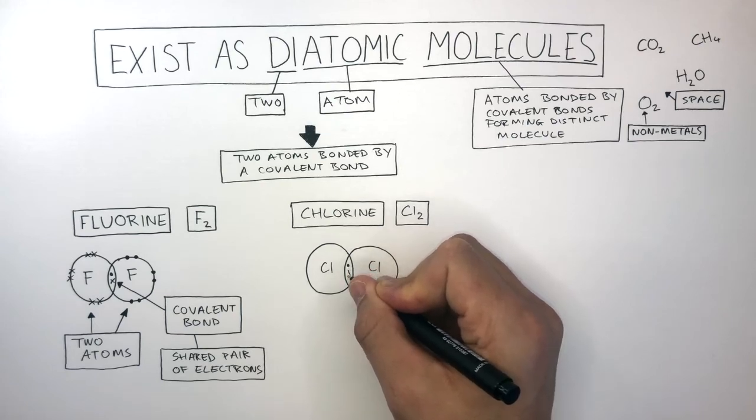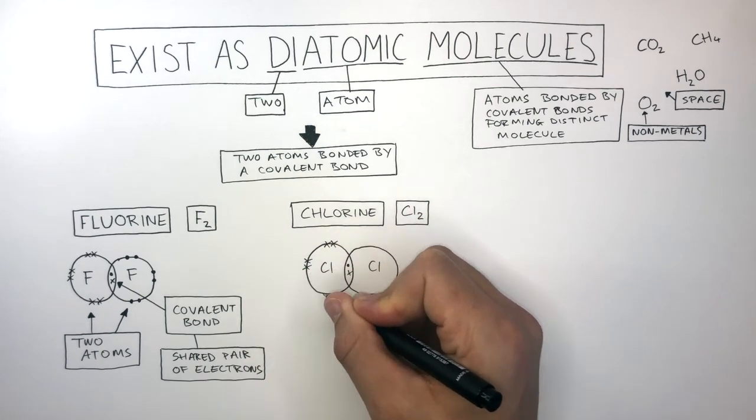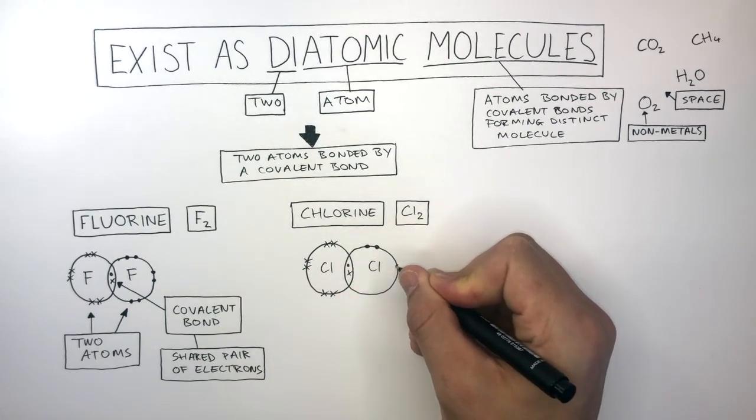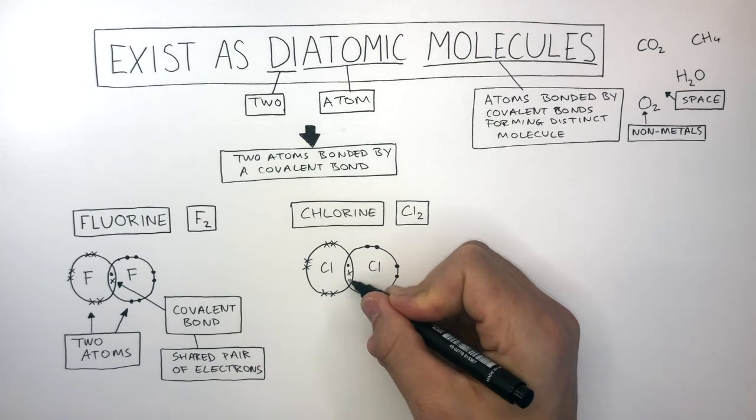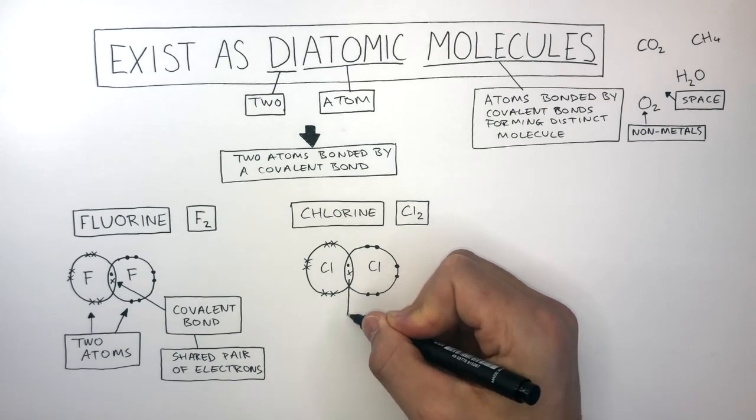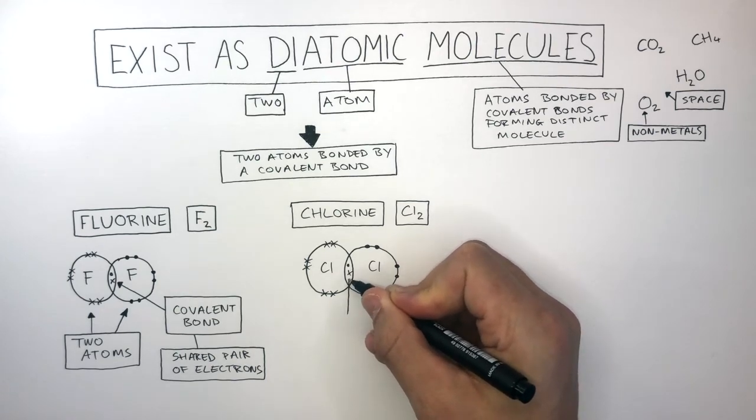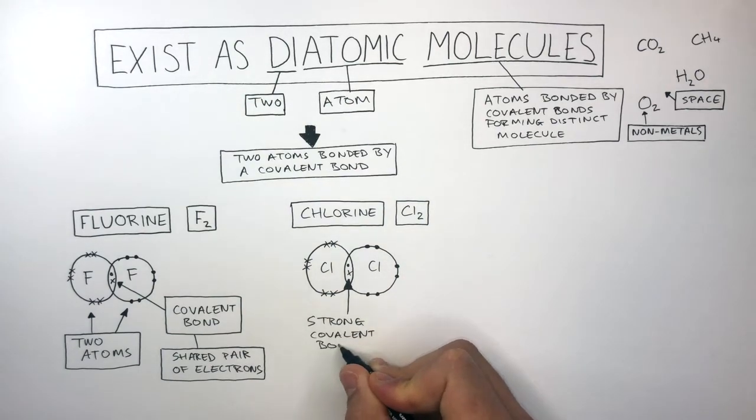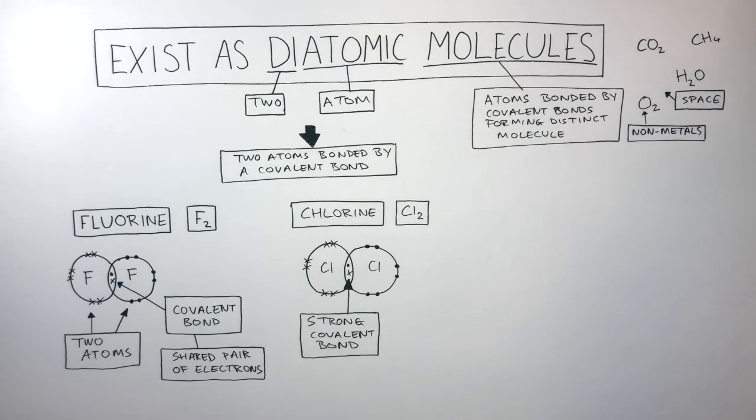Then you draw the remaining electrons as dots and crosses on the remaining shells. Where the two circles overlap and you see the dot and cross which represent the bonded pair of electrons, this is the strong covalent bond which requires a lot of energy to break.